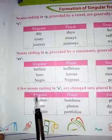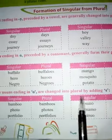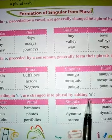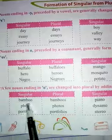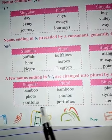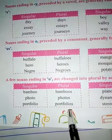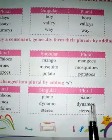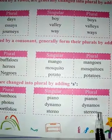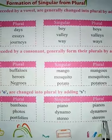A few nouns ending in O are changed into plural form by adding S only. 'Bamboo' — bamboos. 'Photo' — photos. 'Portfolio' — portfolios. 'Piano' — pianos. 'Dynamo' — dynamos. 'Stereo' — stereos.